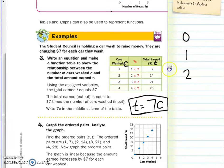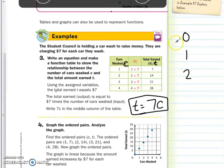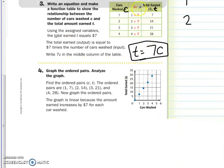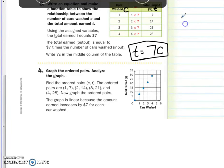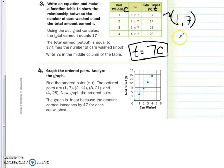Number 4 is asking you to graph these ordered pairs that appear above in this example. So the ordered pairs are 1, 7. We can see it right over here. Then we have 2, 14, which means 2 cars washed gives you $14. 3 cars washed gives you $21. And 4 cars washed is $28. Notice here they've graphed all of them.